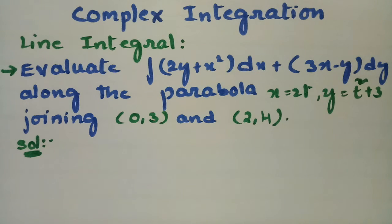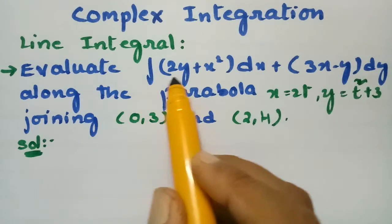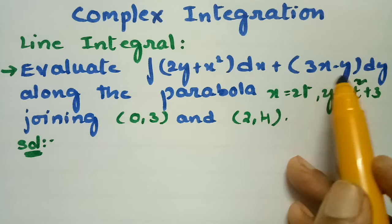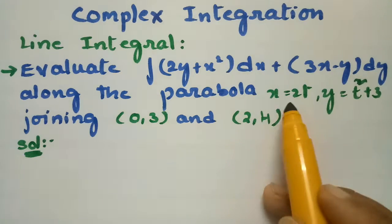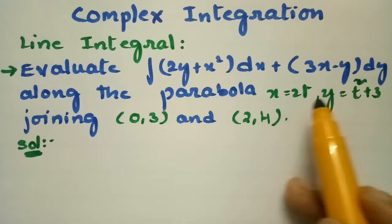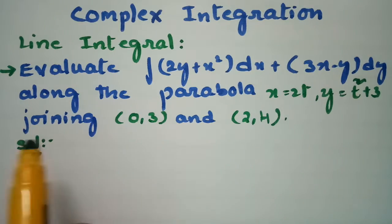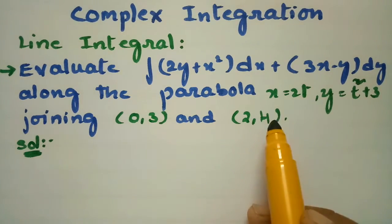Today's video I am going to solve a problem from complex integration. The first topic is line integral. We have to evaluate the integral of (2y + x²)dx + (3x - y)dy along the parabola x = 2t, y = t² + 3, joining the points (0, 3) and (2, 4).